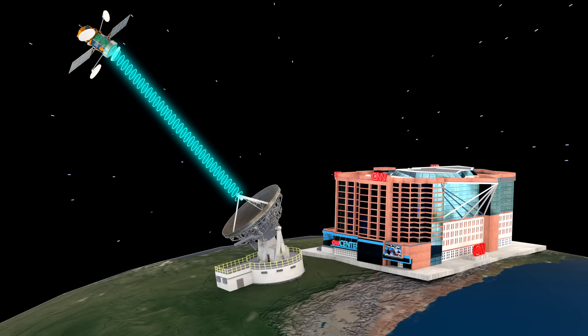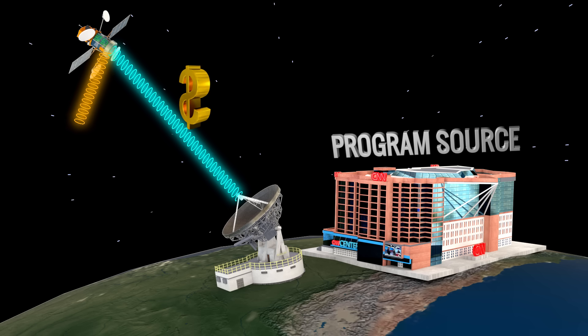It should be noted that before sending the video signals, the program source inserts advertisements at suitable points, and this is the first source of income for the channel.